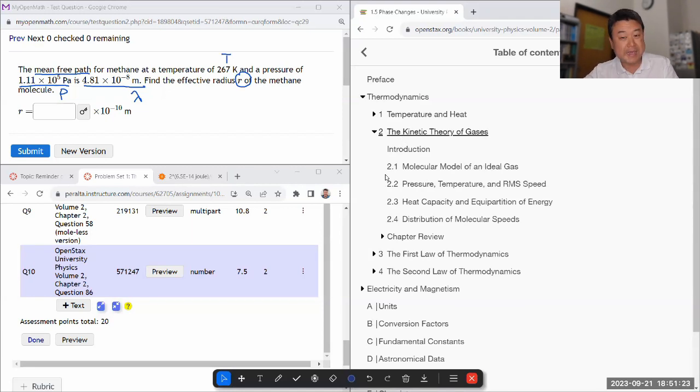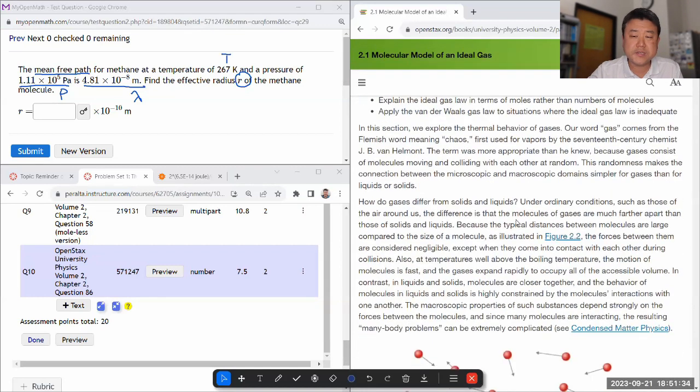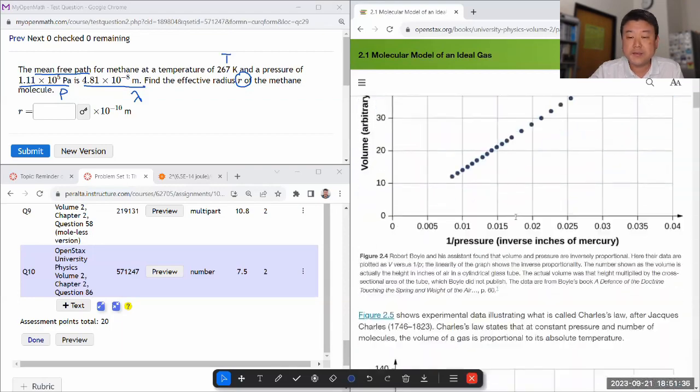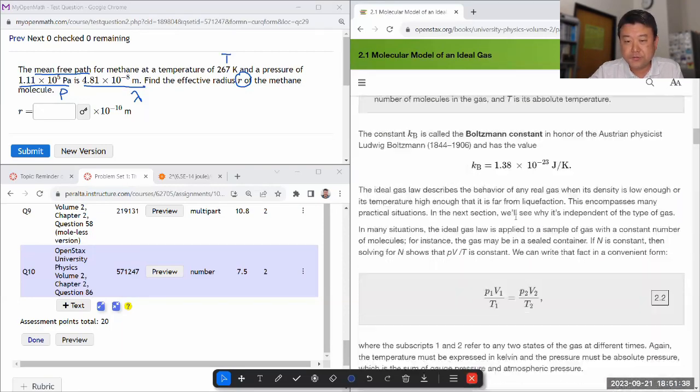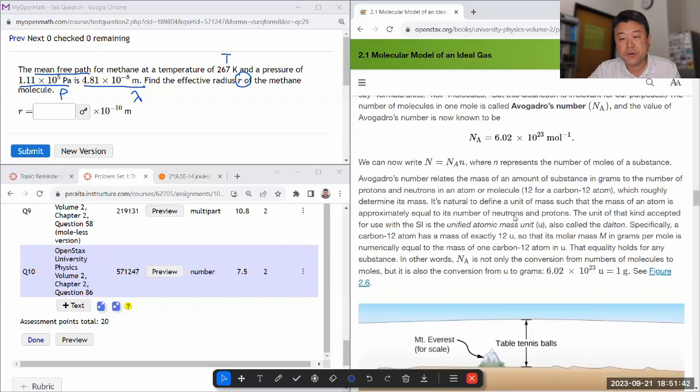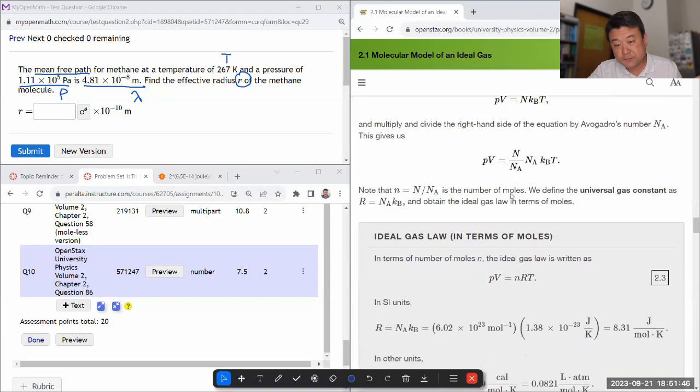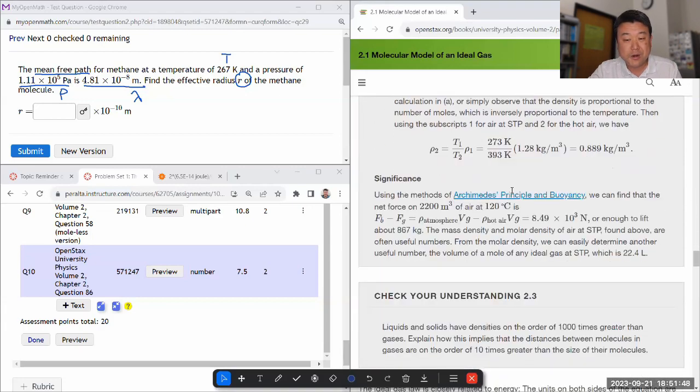I believe it's going to be under 'molecular model of an ideal gas,' so let me look it up there. If it's not there, I'll skim through the next few sections. I'm just skimming through looking for the formulas which will say something along the line of 'mean free path.' You can also use the search function of your online textbook—that's perfectly fine, probably more efficient than what I'm doing.